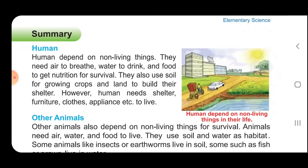Summary: Humans depend on non-living things. They need air to breathe, water to drink, and food to get nutrition for survival. They also use soil for growing crops and land to build their shelter.